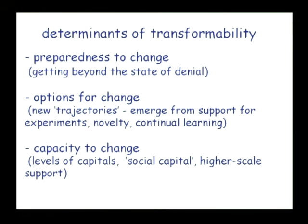The determinants of transformability from comparative studies fall into three things. First is the preparedness to change — the biggest single stumbling block is getting beyond the state of denial. The marginal increase of efficiency in irrigation areas — just tweaking it a bit here and there — actually doomed many of them. Some are beginning to say we've got beyond that state and have to transform into something else. Then it comes down to options for change and the capacity to change. Transformational change is an area we haven't thought through well enough to get a good theoretical basis.